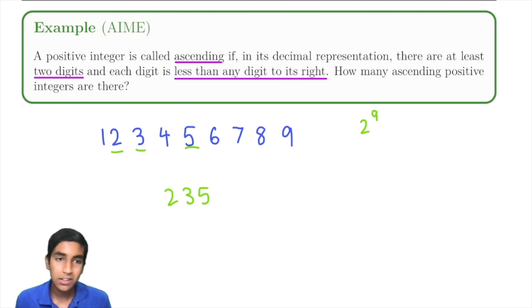So 2 to the 9 ways, but is this it? Or are there any corner cases? Always be on the lookout for corner cases. Let's reread the problem carefully. It says that there's at least two digits. If there's one digit, we are over counting the one-digit numbers.